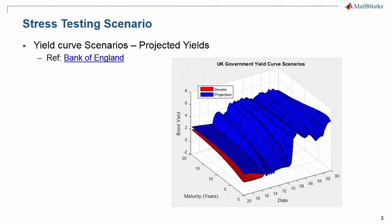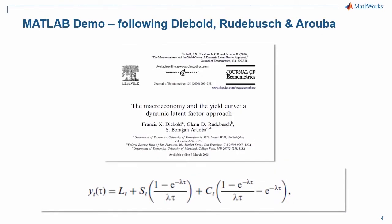The demo we have follows the approach of Diebold, Rudebusch, and Aruba in their paper 'The Macroeconomy and the Yield Curve: A Dynamic Latent Factor Approach.' They showed how they could link certain macroeconomic variables together with certain aspects of the yield curve.